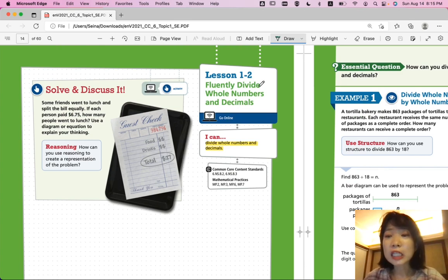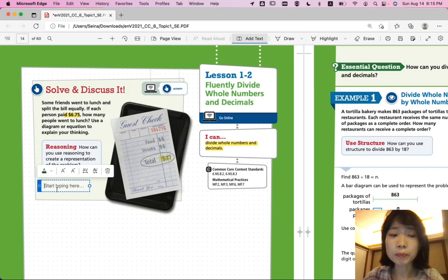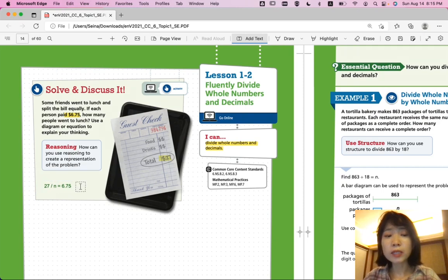We know that each person paid $6.75. So, $27 divided by something is $6.75. What does that mean? $27 divided by $6.75. So, that means, also means,